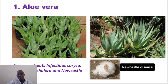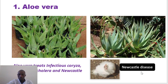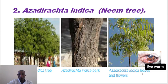Then we have Newcastle disease — for example, this is a bird infected by the Newcastle virus. We see the sign of torticollis, whereby the neck is twisted.